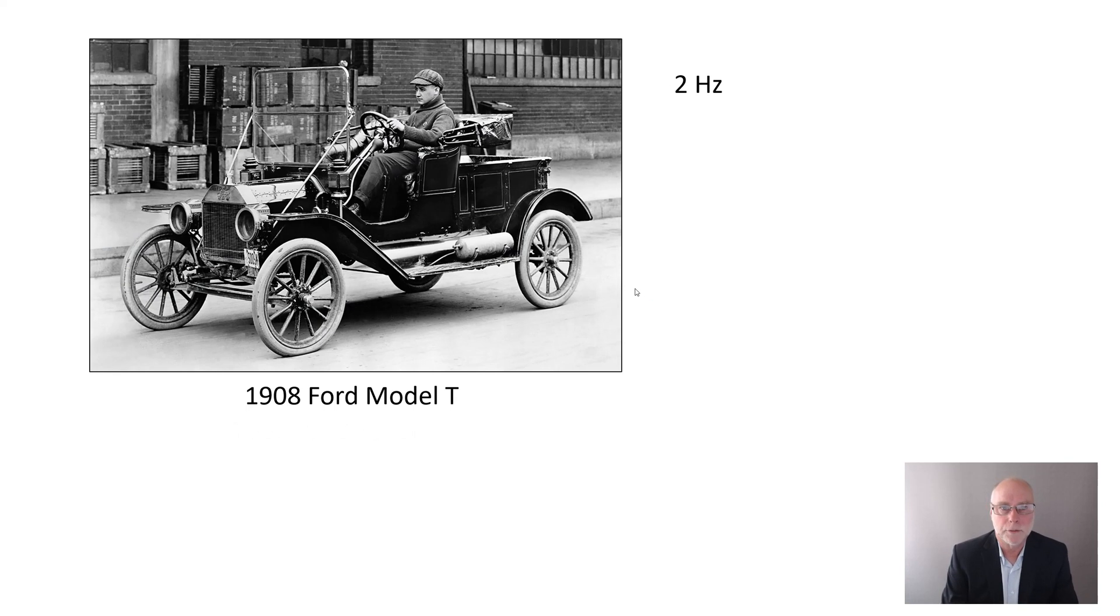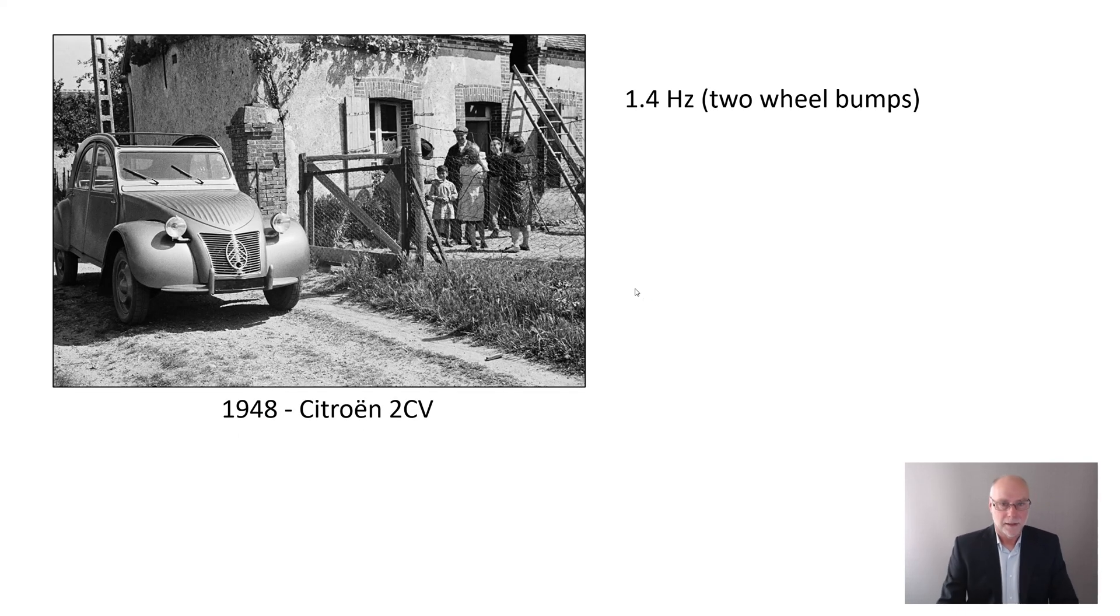The Ford Model T came out in 1908. A measured natural frequency in bounce of two hertz. So closer to the sporting car end of things, if you like. Then we get to cars that are just incredibly impressive. 1948 Citroen 2CV interconnected front rear suspension.